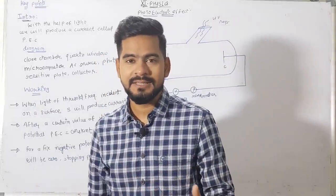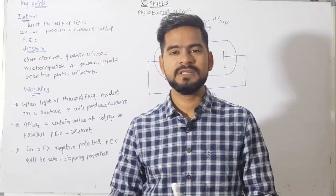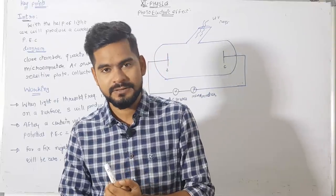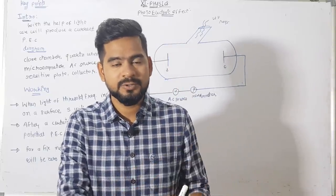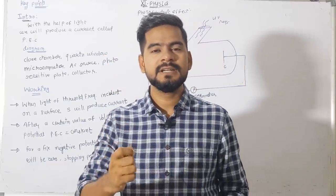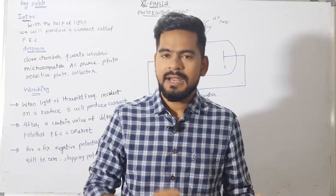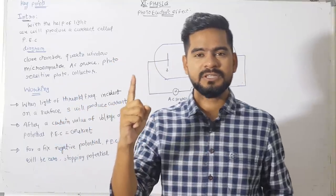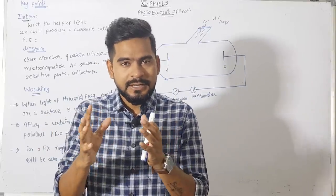Let's begin the class by recalling the previous video lecture. In the previous video lecture we had just started the chapter and we were focusing on electron emission — how the electron will come out from the metallic surface. For that we have to apply some energy called the work function, which depends on the type, nature, and temperature of the surface. There are three types of electron emission: thermionic emission, field emission, and photoelectric emission.